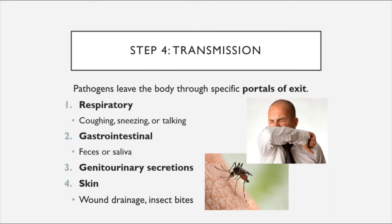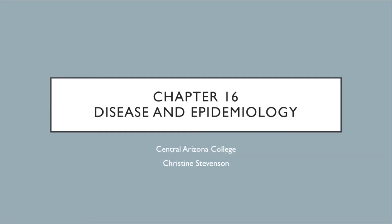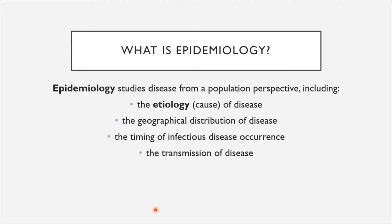This concludes Chapter 15. Now we move on to Chapter 16, Disease and Epidemiology. Epidemiology is the science that studies disease from a population perspective. It looks at the etiology or cause of the disease, the geographical distribution of the disease, the timing of its occurrence, and its transmission.